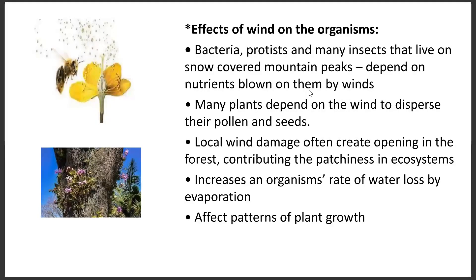These are some of the effects of wind on organisms. Bacteria, protists, and many insects that live on snow-covered mountain peaks depend on nutrients blown to them by winds. Many plants depend on wind to disperse their pollen and seeds, which is very important for pollination and reproduction of flowering plants. Local wind damage often creates openings in the forest, contributing to patchiness in ecosystems, increases in organisms' rate of water loss by evaporation, and affects the patterns of land.